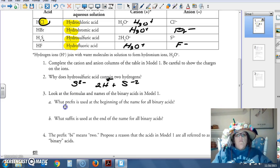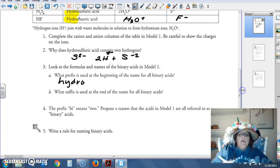Look at the formula and names of the binary acids in model one. What's the prefix used at the beginning for all the binary names? What is the suffix used? The prefix is hydro. The suffix is ic.